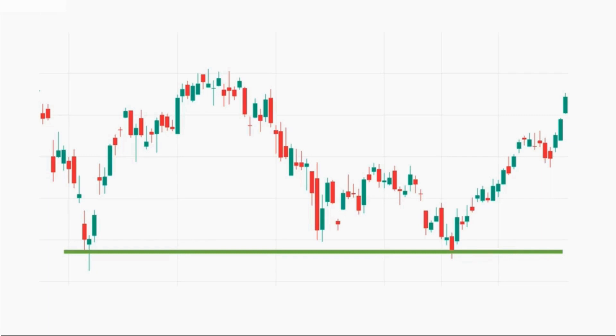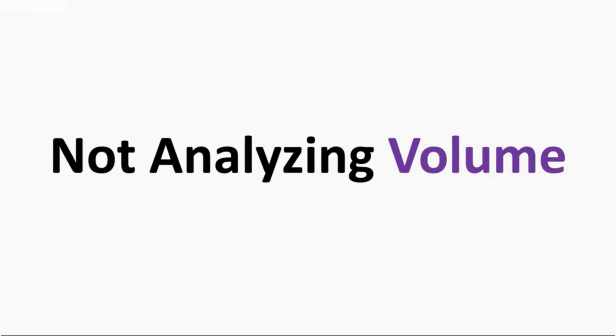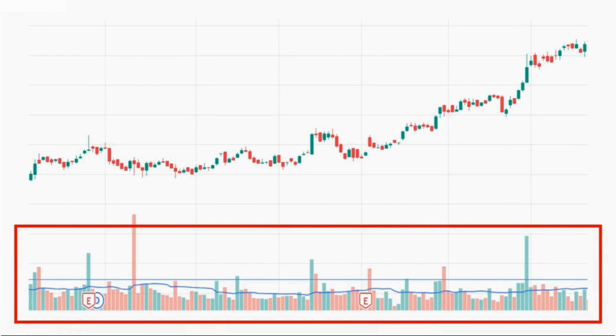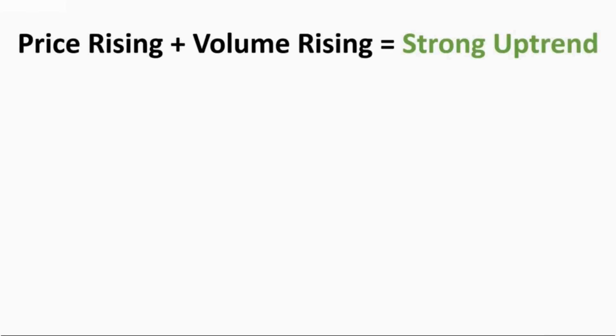Mistake number two that traders make in the market is not analyzing volume. Price and volume are the two primary things the market provides us — all other indicators like RSI, MACD, or volume oscillator are derived from these two elements. We usually analyze the price but we often overlook the volume. Volume is as important as price while analyzing a chart. When the price is rising along with volume rising, it indicates a strong uptrend, meaning more and more buyers are interested in that stock, which is responsible for the strong uptrend in its price.